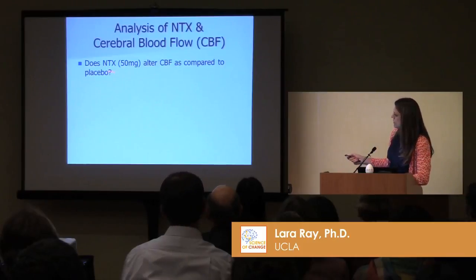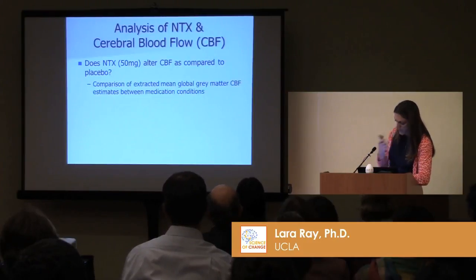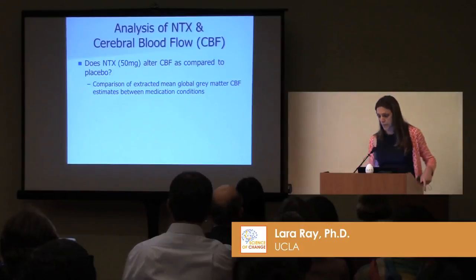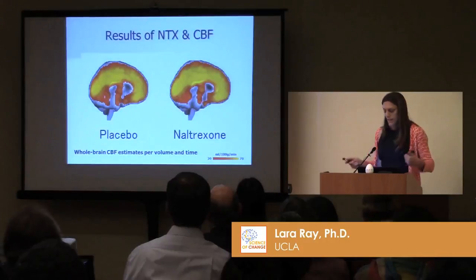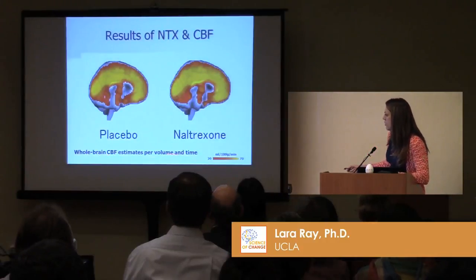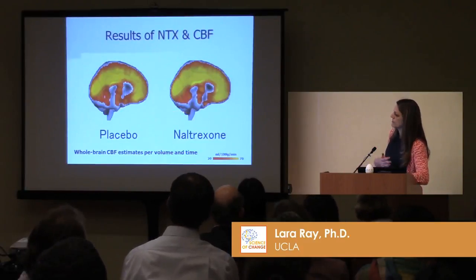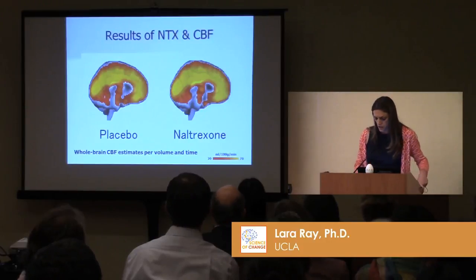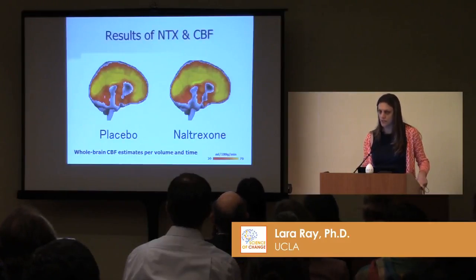Now we can ask questions about naltrexone, our intervention. We wanted to be confident that any medication effects weren't due to changes in cerebral blood flow. To address that, we extracted mean global gray matter CBF from both conditions and compared them, both globally and with voxel-wise comparisons. Thankfully, there were no differences — presenting the whole-brain CBF estimates for placebo and naltrexone, there were no differences, and voxel-wise comparisons also showed no differences once you apply a threshold for multiple comparison. That gives us more confidence in the results going forward.